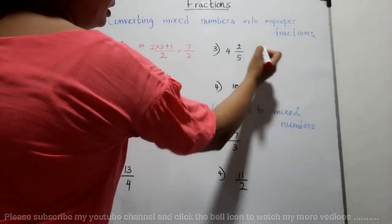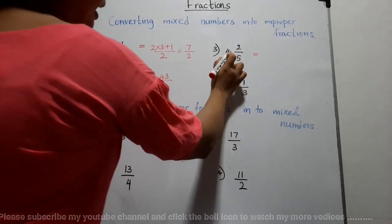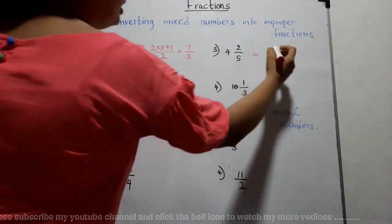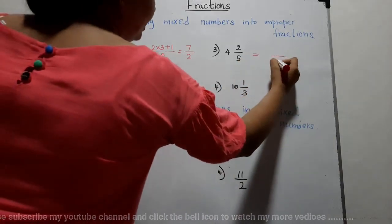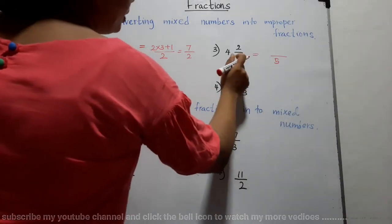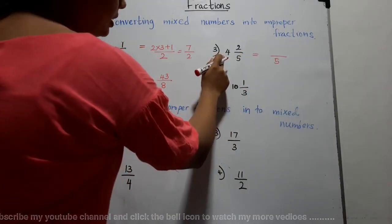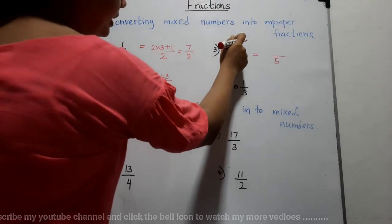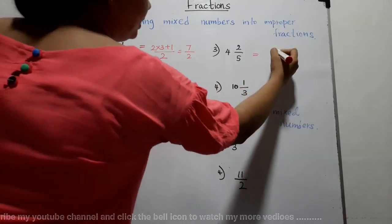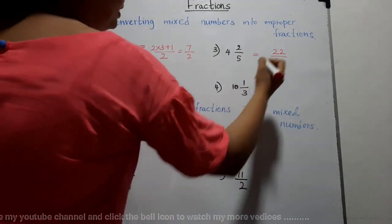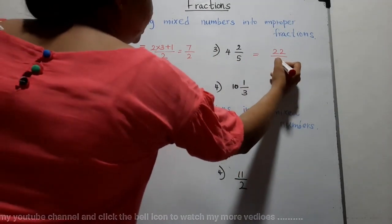Next: four and two-fifths. Denominator is five. Five into four is twenty. Twenty add two is twenty-two. The answer is twenty-two fifths.